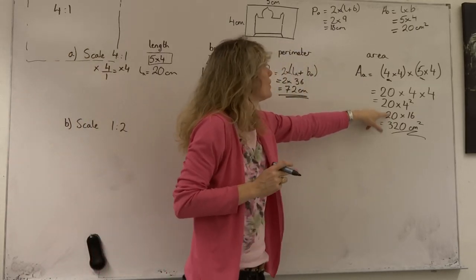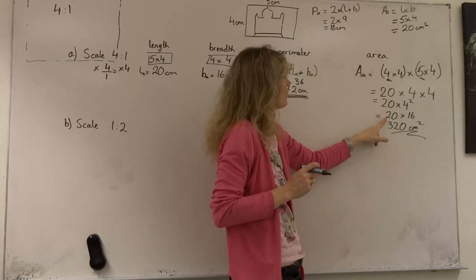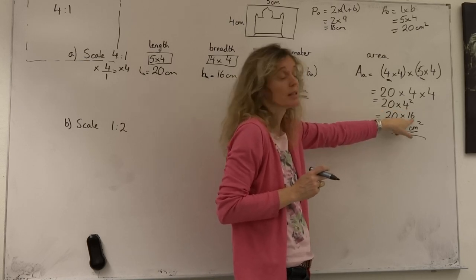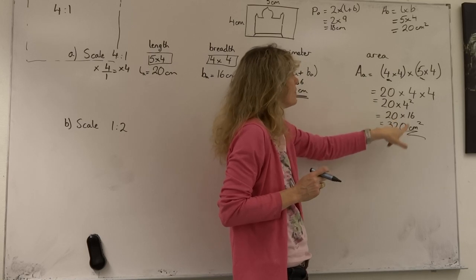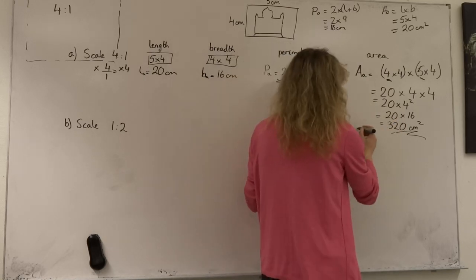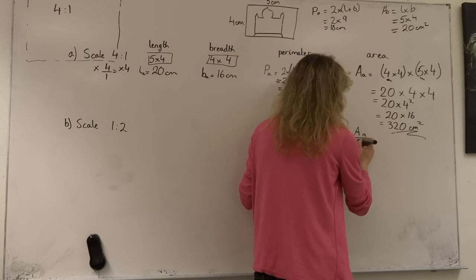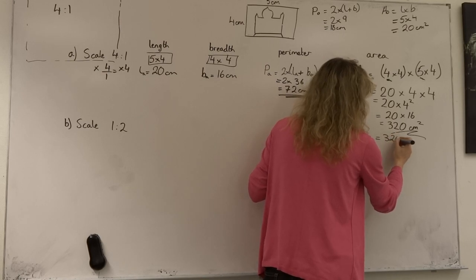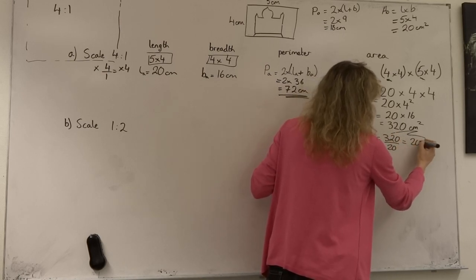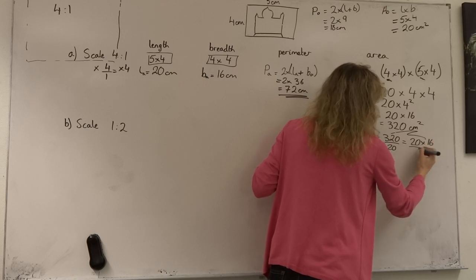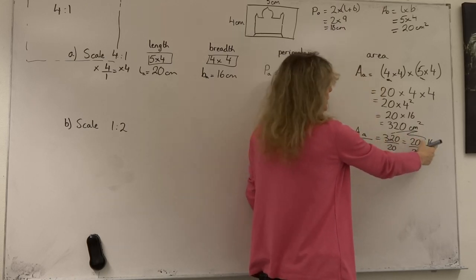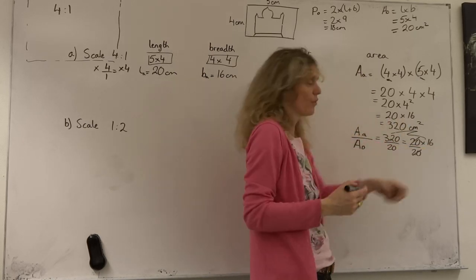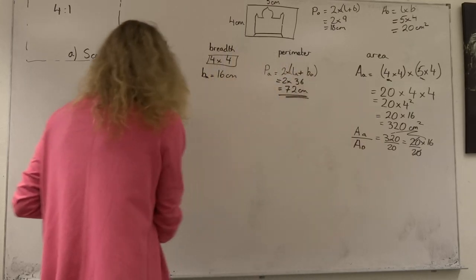The original area was 20, and the new area of our magnification is 20 times the magnification squared — that's 4 squared, which is 16 — giving 20 times 16, which is 320. So the area of the enlarged sketch divided by the area of the original is 320 divided by 20, which equals 16, or 4 squared. The area magnification is 16 times larger, and this is a very important concept.